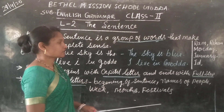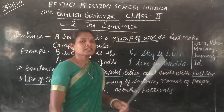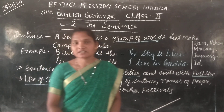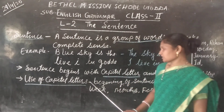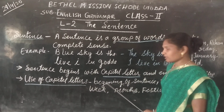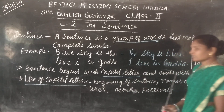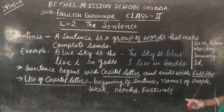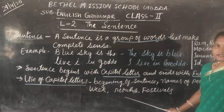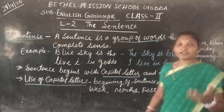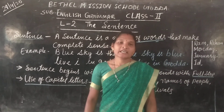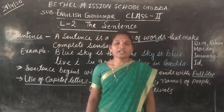Now, in a sentence, which are the times or places where we have to use the capital letters? We use capital letters at the beginning of a sentence, then in the names of people, days of the week, months, and festivals, then rivers and mountains — in all these areas we use capital letters whenever the names come.